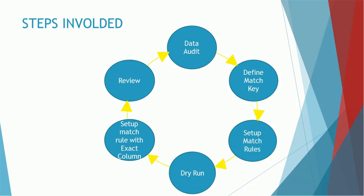The underlying process for loading data in MDM, generating tokens, and matching those records based on those tokens will remain the same — it will not change. Once you've loaded the data, we have to do the data auditing. We have to analyze the data — what data it actually contains. Then we need to define the match case: which columns will contribute to matching. For example, the party name is one major contributor, and address is also an important column.